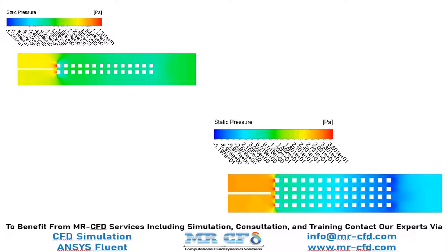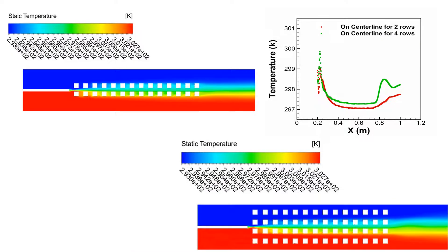The contours also show that pressure is more positive in the upper part of the domain where the temperature is lower. The temperature contours for both cases are almost identical, but in the central part of the domain the diagrams show that temperature is higher for the four-rows case. This can be attributed to the greater number of separation zones in the second case, which caused a slight loss of heat and higher temperature along the central line compared to the first case.